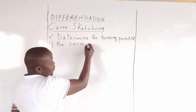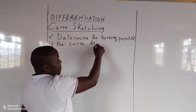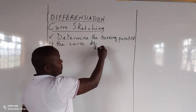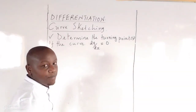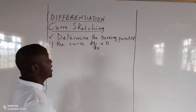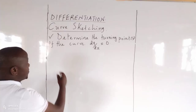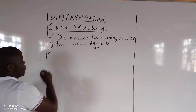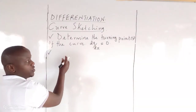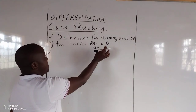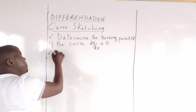Therefore, at the turning points, the derivative of the function will give us zero. That is something we are supposed to master in the sketching of a curve. Again, when we are sketching a curve, we must determine the nature of the turning points. The turning points we have identified in step one — we determine their nature.